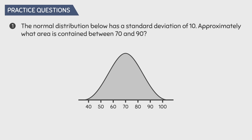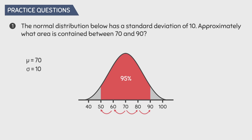Let's do some practice questions. Question 1: The normal distribution below has a standard deviation of 10. Approximately what area is contained between 70 and 90? We know the population mean is 70 because it's in the center of the distribution, and one standard deviation equals 10. According to the 68-95-99.7 rule, there is 95% area within two standard deviations of the mean. Two standard deviations to the right gets us to 90, and to the left gets us to 50. However, we are only interested in the area from 70 to 90, so dividing 95% by 2 gives us an area of 47.5%.